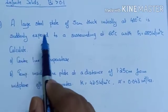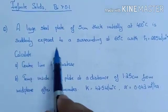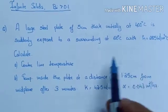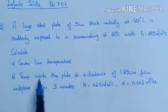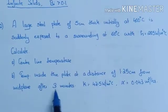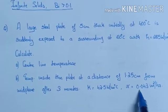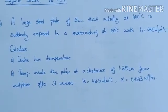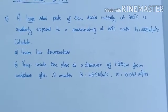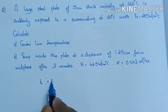A large steel plate of 5 cm thick, initially at 400 degree Celsius, is suddenly exposed to a surrounding at 60 degree Celsius with heat transfer coefficient equal to 285 Watt per meter square degree Celsius. Calculate the center line temperature and the temperature inside the plate at a distance of 1.25 cm from the mid plane after 3 minutes.